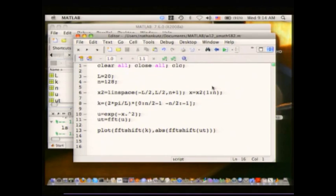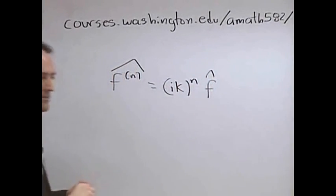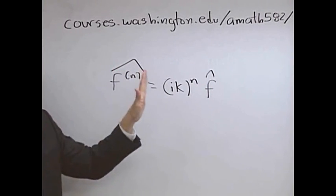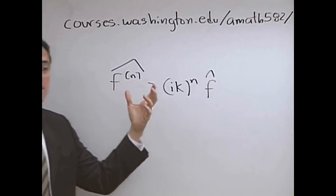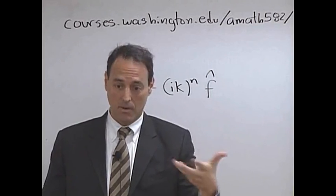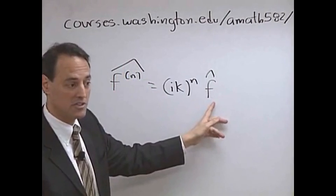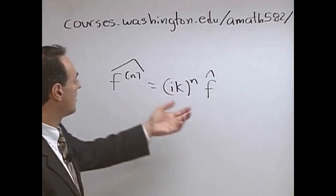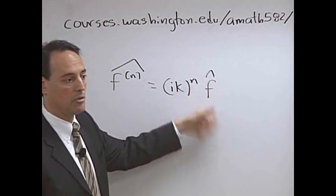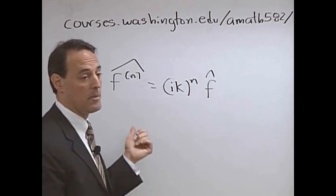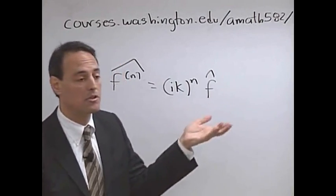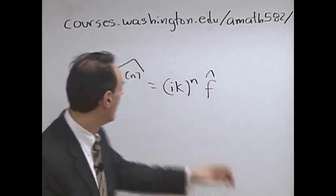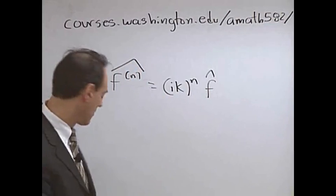There's a very nice relationship worked out in the notes. The hat represents Fourier transform, and this represents the nth derivative. If I take the nth derivative of a function, the Fourier transform of the nth derivative is the same as Fourier transforming the function itself and multiplying by (ik)^n. So if I want the third derivative, I take the function, Fourier transform it, multiply by (ik)^3, then inverse Fourier transform it. If your boundary conditions work — boundaries go to zero, periodic function — this is one of the most accurate ways to compute a derivative: spectrally accurate.